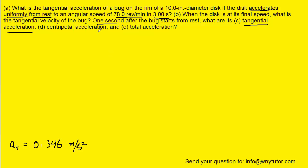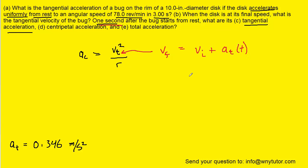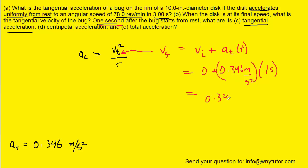For Part D, the centripetal acceleration equals the tangential velocity squared divided by the radius. We need to find the tangential velocity one second after the bug starts from rest. The final tangential velocity equals the initial tangential velocity plus the tangential acceleration times the time. The initial tangential velocity was zero, the tangential acceleration is 0.346 meters per second squared, and the time is one second, giving us 0.346 meters per second.